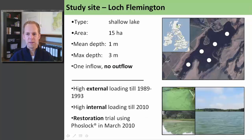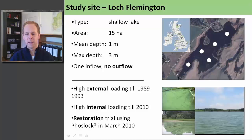North Flemington is located in the north of Scotland. It's quite a small shallow lake with an area of 15 hectares and a mean and maximum depth of 1 and 3 meters. It has one inflow and no outflow, which means that phosphorus which enters the lake is trapped inside the lake. The lake has a common history of eutrophication problems like many other lakes.